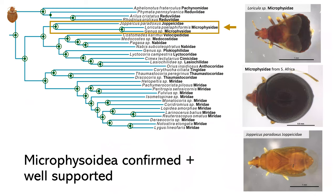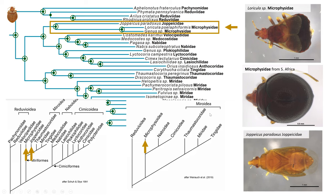We were really excited that Microphysoidea is confirmed and well-supported. We included a weird microphysoid from South Africa and were excited to see that it was placed nicely within our tree. This is also notable because Schuh and Stys's analysis found that Microphysoidea is not monophyletic, whereas it is in Biardidae's analysis — so we were excited to have this confirmed.